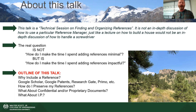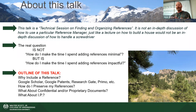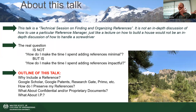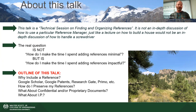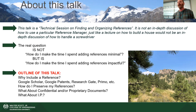The real question is not how do I make the time I spend adding references minimal — which I see all the time. When we get to the final section of this, I'm going to be talking about the impact of the references you pick on how your paper is reviewed. It should be: how do I make the time I spend adding references impactful? On the very extreme side, I try to create a new set of references every time I write a paper. I actually do it with a little tiny spreadsheet.